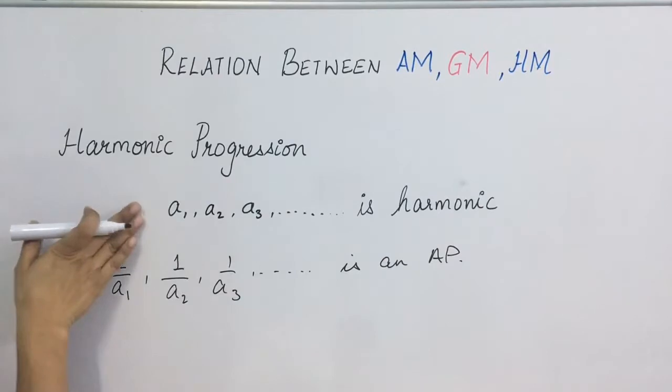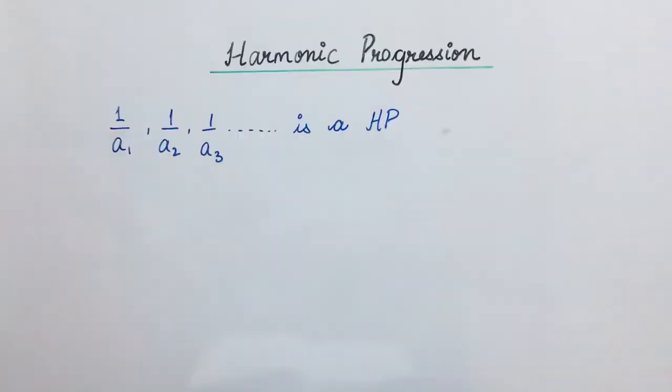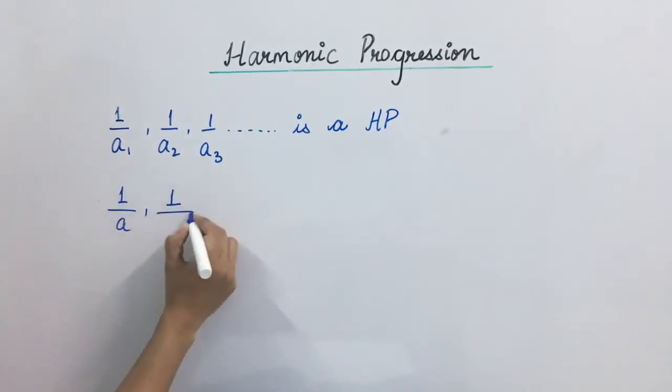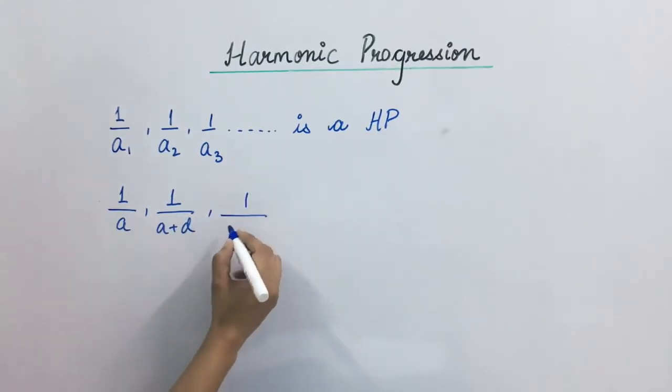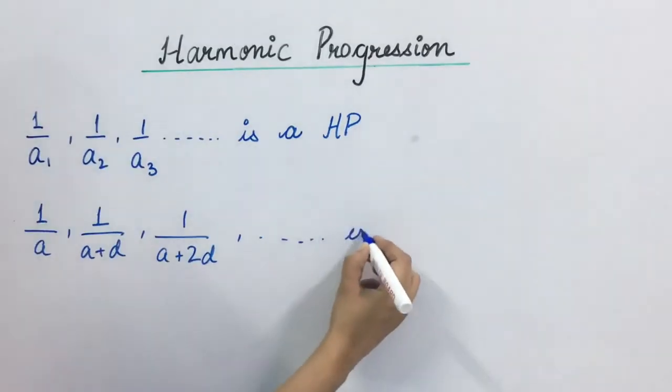So we can say that this series, 1 upon A1, 1 upon A2 and so on, will be an HP. If we can write this in this form, 1 upon A, 1 upon A plus D, 1 upon A plus 2D and so on, and this is an arithmetic progression.